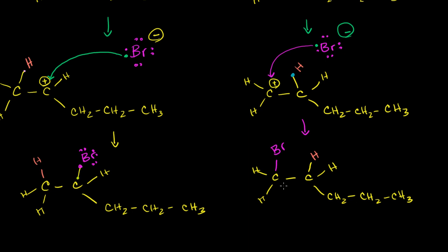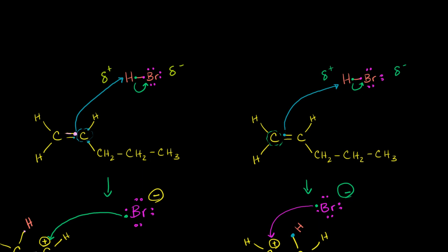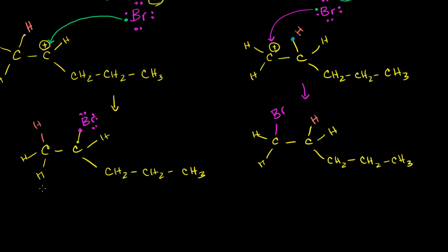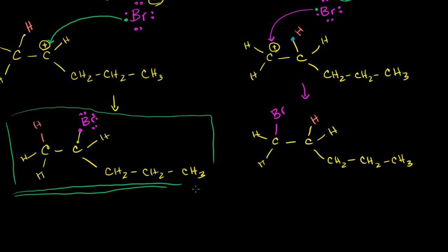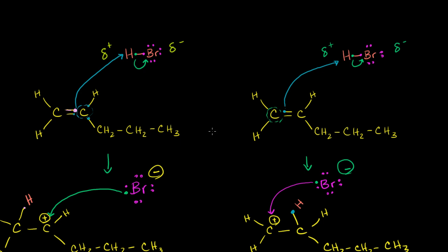This is another possible mechanism. The first mechanism gave us 2-bromopentane — bromine on the number 2 carbon. This mechanism gives us 1-bromopentane — bromine on the 1 carbon, still 5 carbons. On first cut, both seem like reasonable mechanisms, but if you did it experimentally, you would see that 2-bromopentane is the one you really observe. The great majority of products are going to be 2-bromopentane, not 1-bromopentane. So why is one so much more likely to happen than the other?